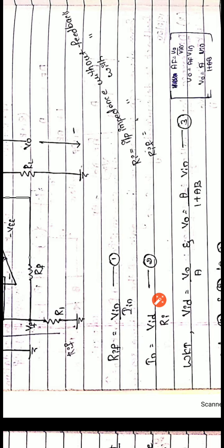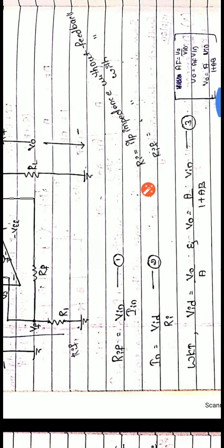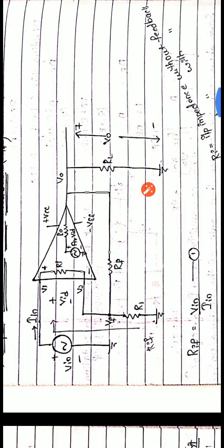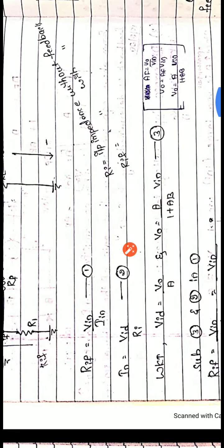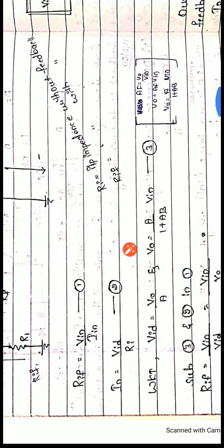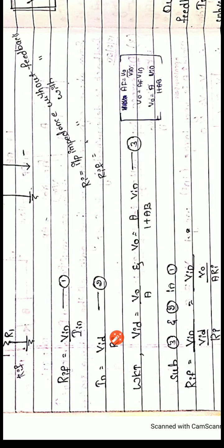From Equation 1, we need to find VIN and IIN. First, concentrating on IIN: since VID is the input to the op-amp and RI is the input impedance, using Ohm's law IIN becomes VID divided by RI. This is taken as Equation 2: IIN = VID / RI.